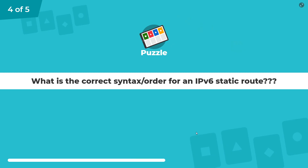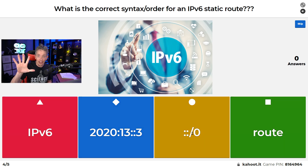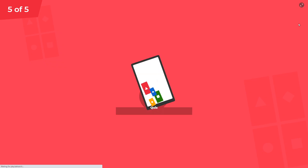This is a puzzle: What is the correct syntax or order for an IPv6 static route? The syntax is: IPv6 route, then the network you're trying to reach - in this example a default route with ::/0 - and then the next hop address of the router in the path you would forward that packet to. That's question four of five, one more to go.